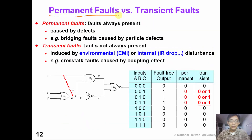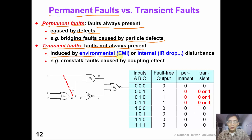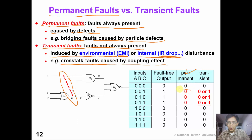Bridging fault is a permanent fault instead of a transient fault. A permanent fault means the fault is always present, caused by a defect such as a particle between two wires. On the contrary, transient faults are not always present — they can be induced by environmental disturbance such as electromagnetic interference, or internal disturbance such as IR drop. For example, crosstalk faults caused by coupling effect are transient faults. For a permanent bridging fault between signals A and E, the output is always deterministic given a test pattern, whereas for a transient fault the result is not quite predictable.